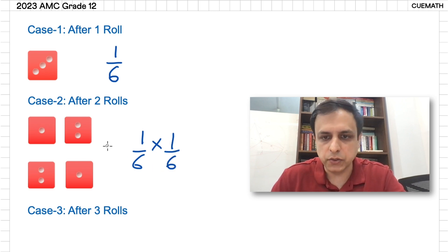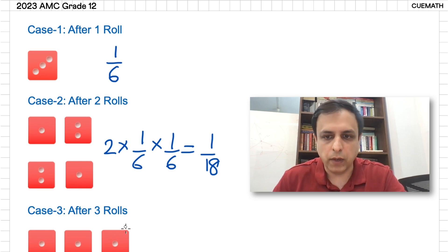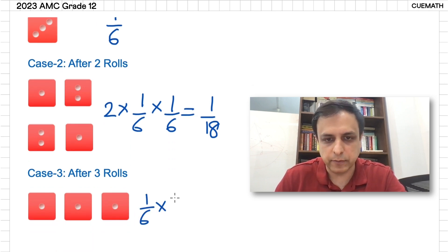And case three happens only if we get a one, one, and one. The probability of this happening is one by six times one by six times one by six, which is equal to one by two hundred and sixteen.